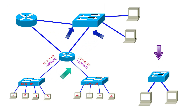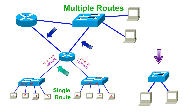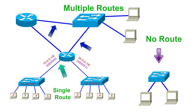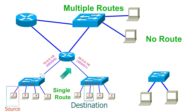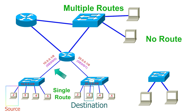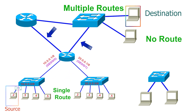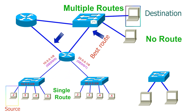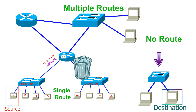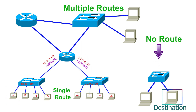A router can have a single, multiple, or no route to a destination. If it has only one route to a destination, it uses that route to forward incoming packets. If it has multiple routes, it selects the best route. If there is no route, it discards the packets.